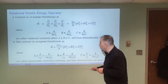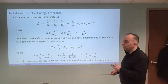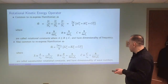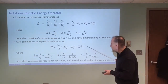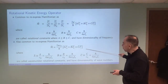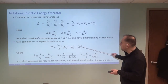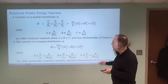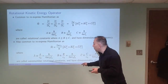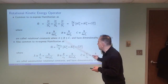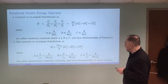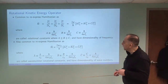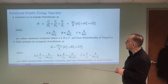A lot of times people work in wave numbers rather than frequencies, as you may remember from IR spectroscopy. So there's another way of representing this where the constants Ã, B̃, and C̃ — with a tilde to distinguish them from the rotational constants — are called wave number rotational constants. They are just A, B, and C divided by the speed of light, and these are used very often when doing spectroscopy and looking at rotational transitions.